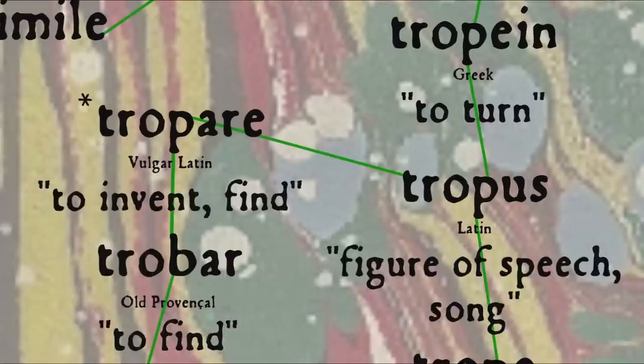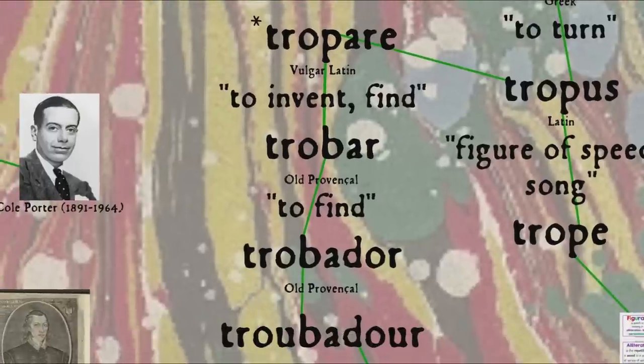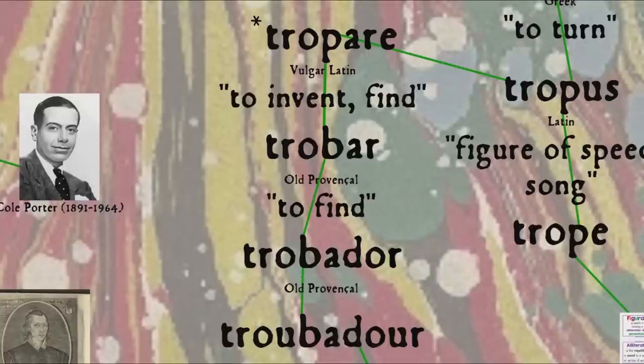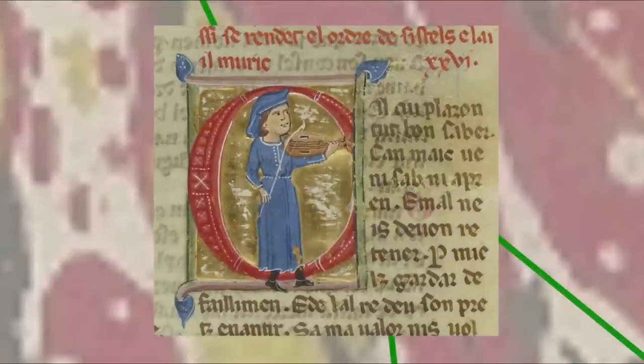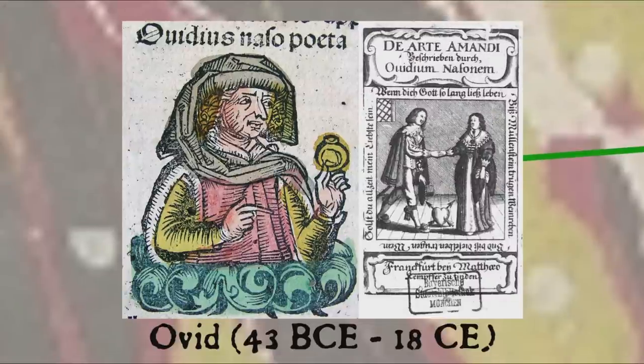Now returning to the word trope, that same root also made into English poetic vocabulary through another more circuitous route. In Latin, in addition to meaning a figure of speech, it also came to mean a song, one presumably using various figures of speech, and from that it became the vulgar Latin term tropare, to invent or find, from the idea of composing a song. This eventually leads to modern French trouver, to find, but it also produced the old Provençal form trobar, to find, and trobador, which becomes English troubadours. Itinerant composers and singers of lyric poetry in twelfth and thirteenth century southern France.